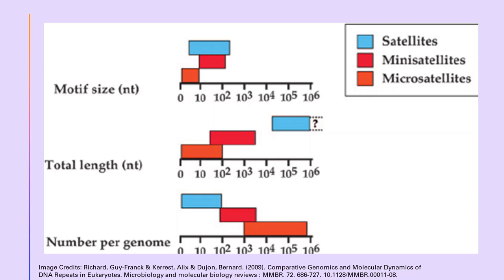For each category — satellites, minisatellites, and microsatellites — the distribution of motif sizes, total lengths of repeat arrays, and numbers of occurrences of each repeat category per eukaryotic genome can be characterized.